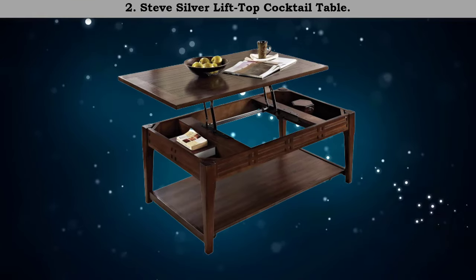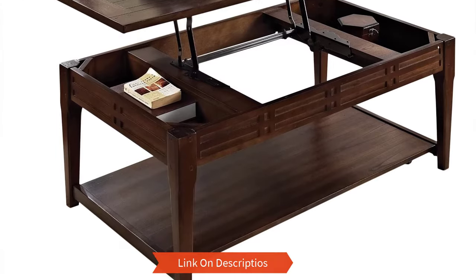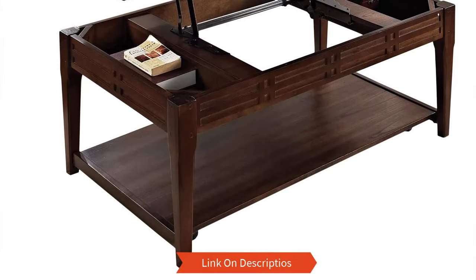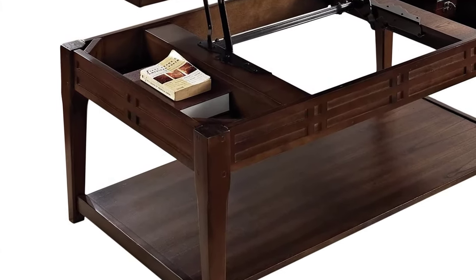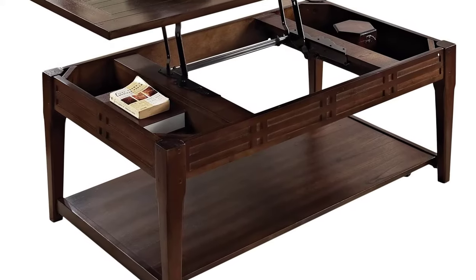Number 2: Steve Silver lift top cocktail table. This lift top table has a cherry finish and the hidden storage has three different compartments to store items in an organized way. There is also an open shelf underneath.